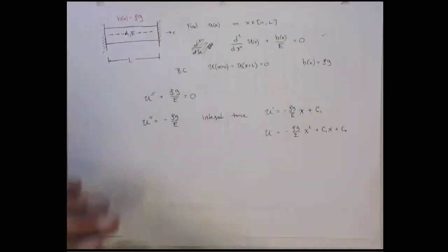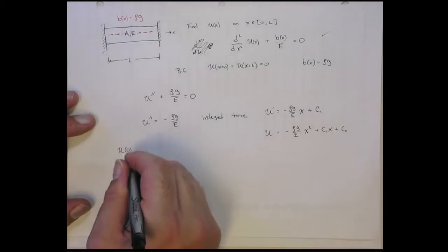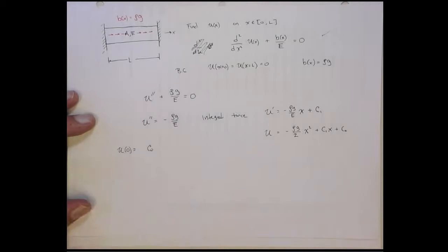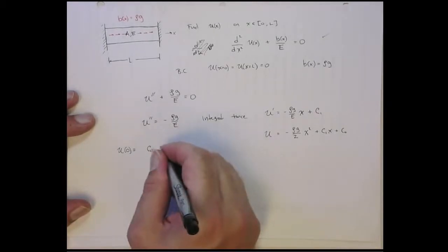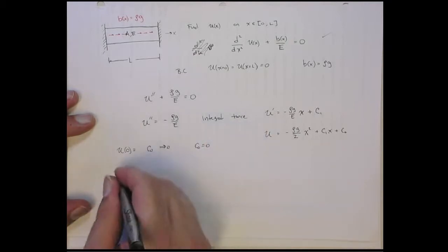We solve for the constants of integration using the boundary conditions. And now we need to just invoke the boundary conditions. So u at 0, putting that into here, I just get c2, and that has to go to 0. So that tells me c2 equals 0.